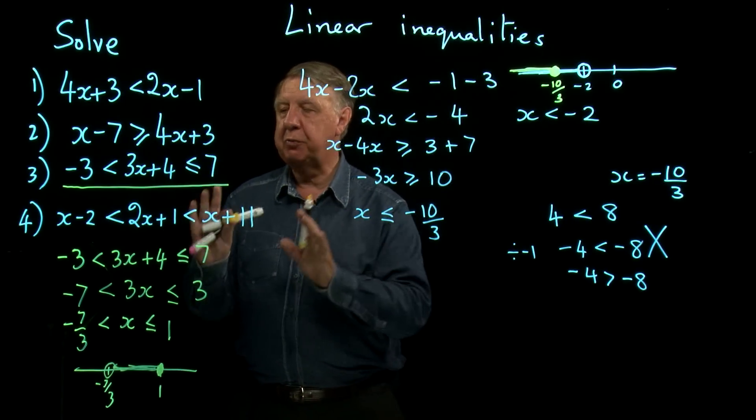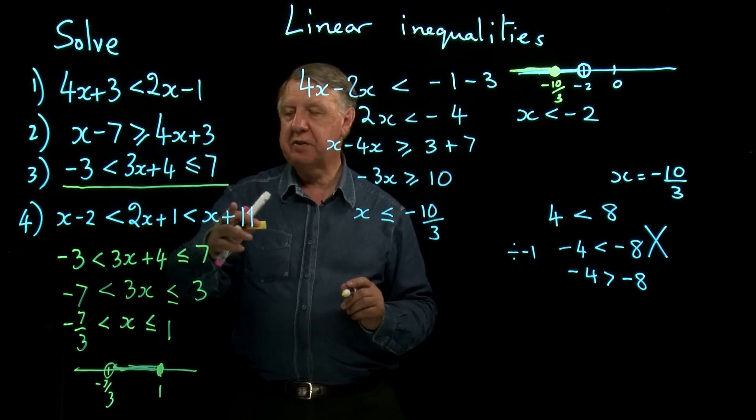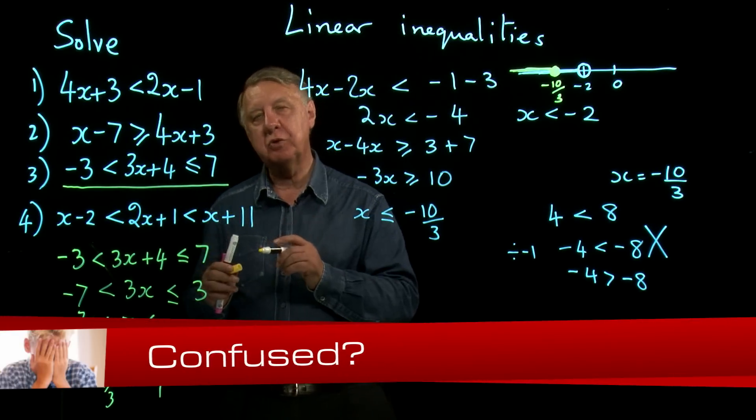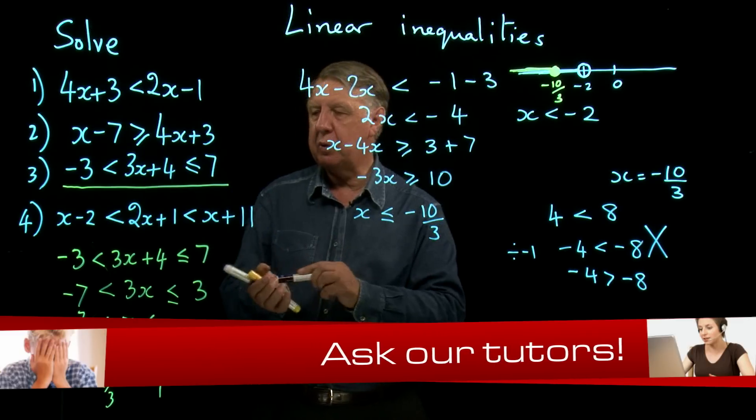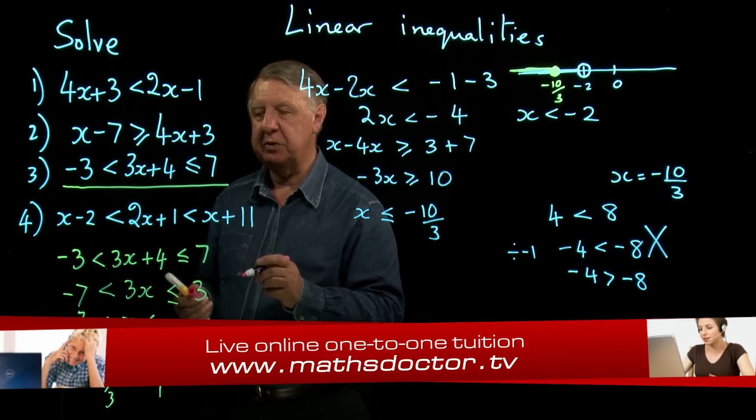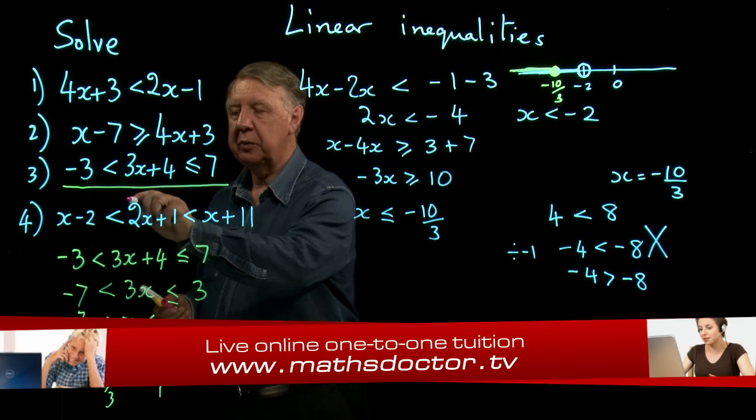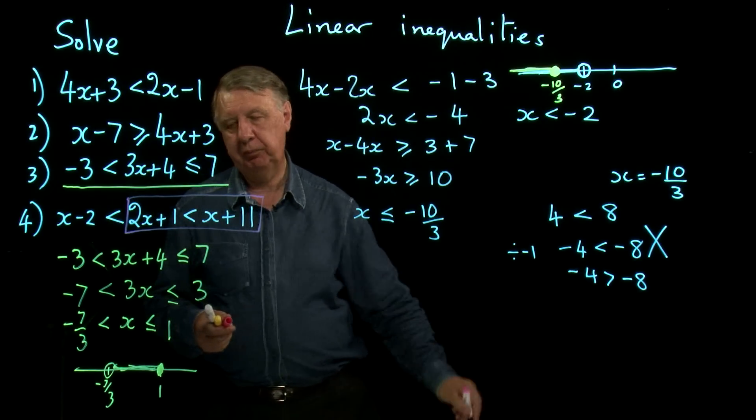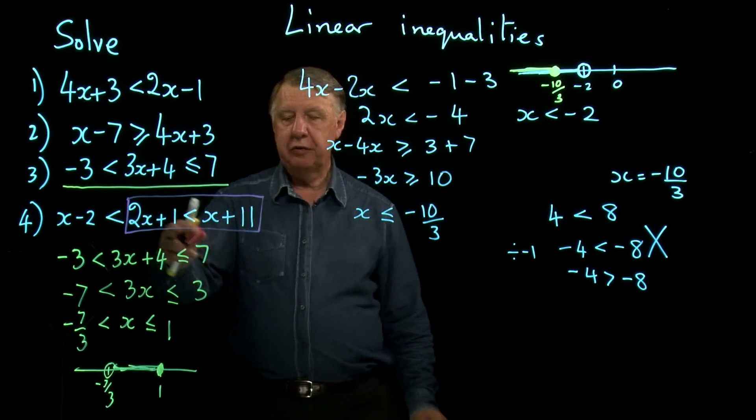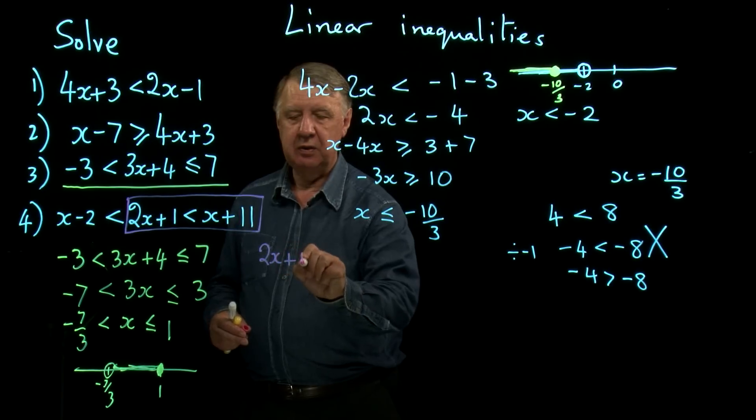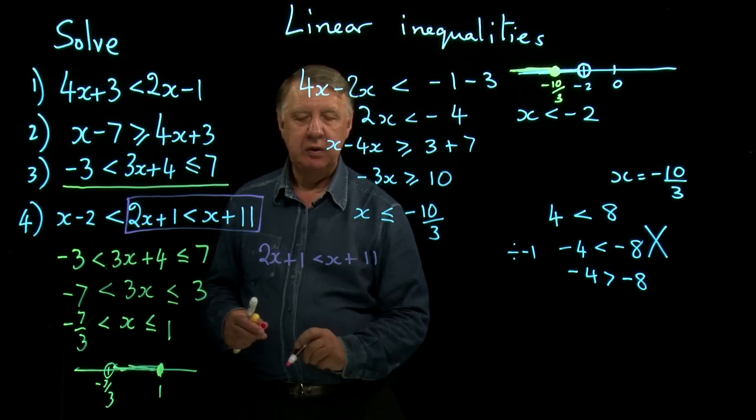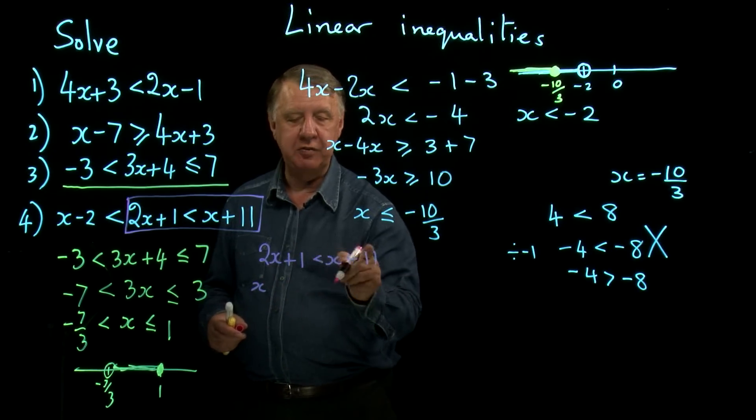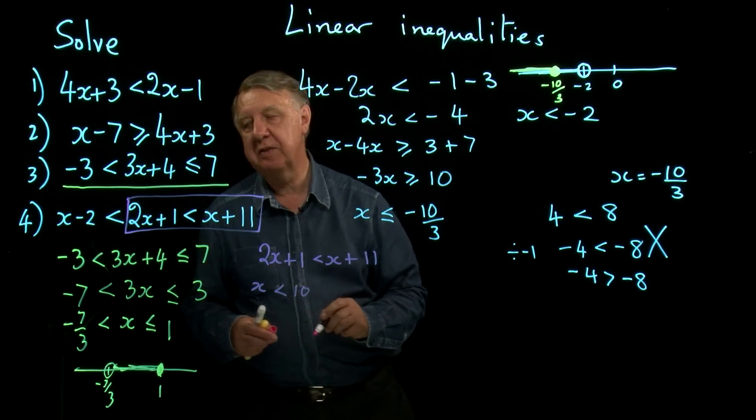Okay, straightforward, but do follow the rules. Now this type, x is appearing all over the place, and that's much more tricky to work out. So we have to break the thing down into simpler bits. So we first of all look at that bit. So for that bit, 2x plus 1 less than x plus 11. So if I take x from each side, I get x. And if I take 1 from each side, I get that x has to be less than 10.